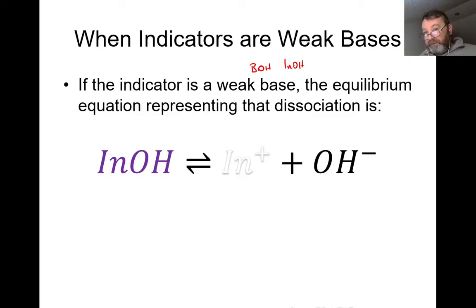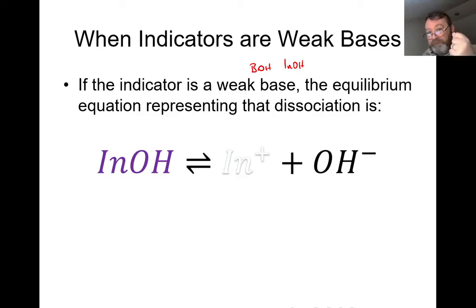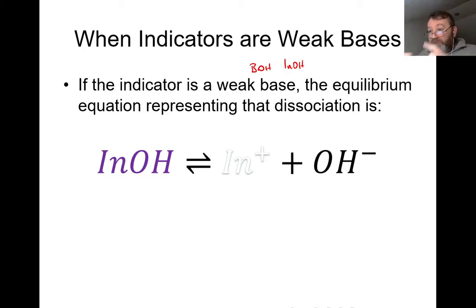To get rid of the purple color and go to colorless, I move equilibrium to the right-hand side. The stress involved is bringing down the concentration of OH-, and the quickest way is to add in H+, which is an acid. The H+ combines with OH-, removes it from solution as water, drops its concentration as a stress, and then equilibrium moves to the right to produce IN+ again, and the colorless solution reappears. By adding acid and base alternately, we can swing the equilibrium from left to right and change the color.